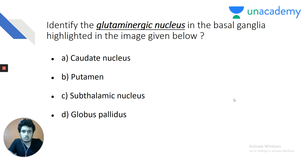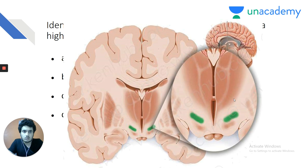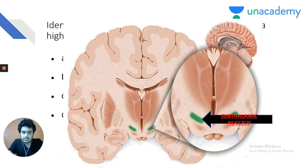This is a type of question where you cannot get it right unless you are sure of the anatomy of basal ganglia. You need 100% knowledge of the anatomy — you cannot guess. The answer is the subthalamic nucleus, identified in green. So let's review the anatomy of basal ganglia.